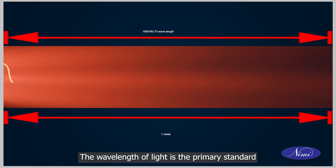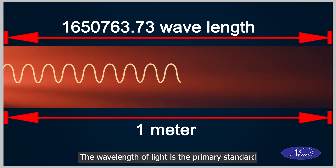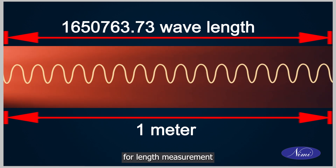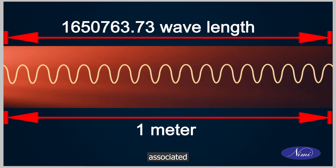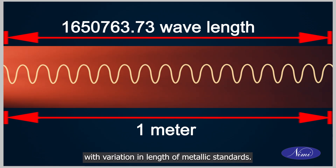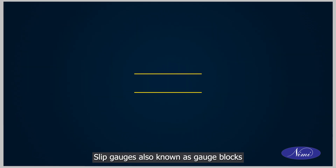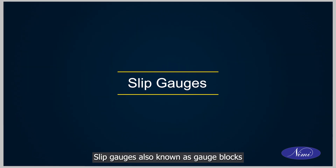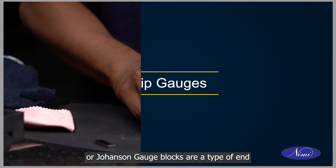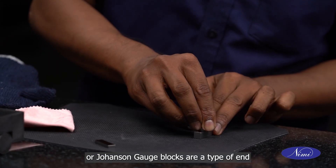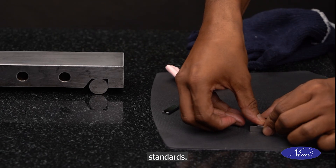The wavelength of light is the primary standard for length measurement, used to avoid problems associated with variation in the length of metallic standards. Slip gauges, also known as gauge blocks or Johansson gauge blocks, are a type of end standards.